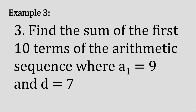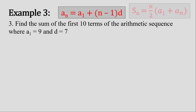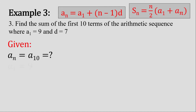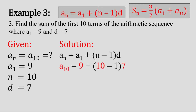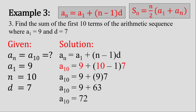Example number 3. Find the sum of the first 10 terms of the arithmetic sequence where a sub 1 is 9 and d is 7. Let's write the given and solve for a sub 10, since the last term is essential for us to find the sum of the first 10 terms. Substituting into the formula, we simplify everything inside the parentheses — 9 times 7 is 63, and 9 plus 63 gives us a sub 10 equal to 72.